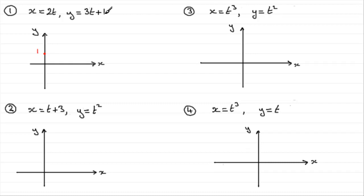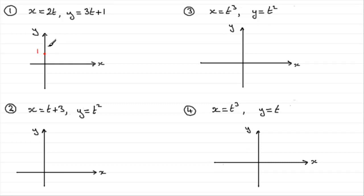Do you notice that y is a linear function and x is a linear function? That is, we've got t to the power 1 and t to the power 1. When you've got cases like this, you're going to get a straight line. Now when t is greater than zero, x is positive — we're going to be moving out in this direction. But y is going to be greater than 1 and it's going to rise at a faster rate than we're moving in the x direction. So it's going to be a straight line, something like this.